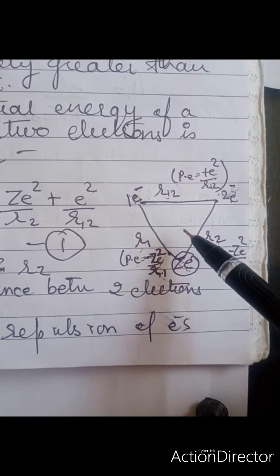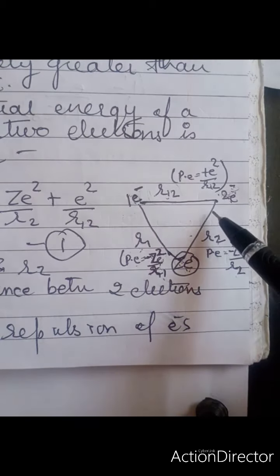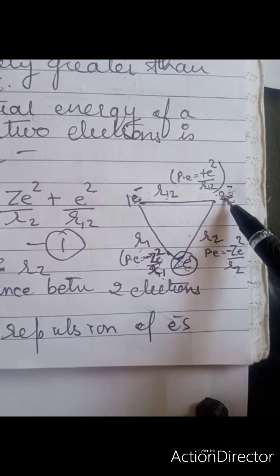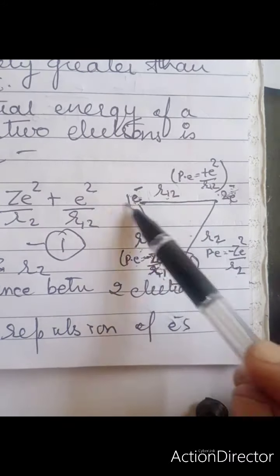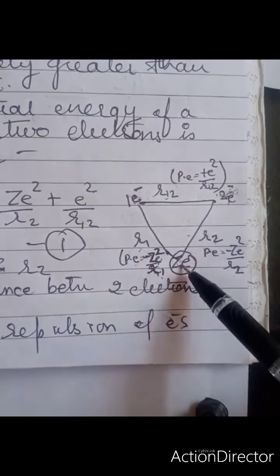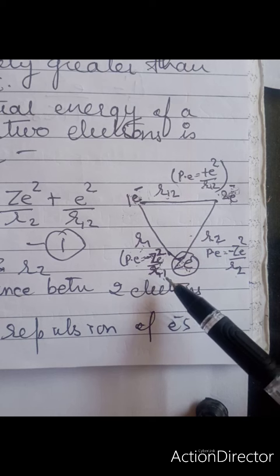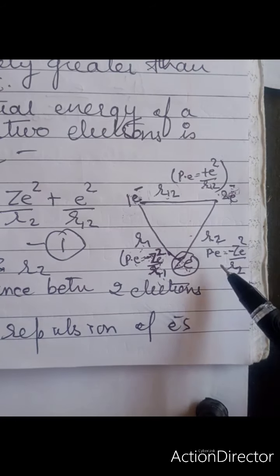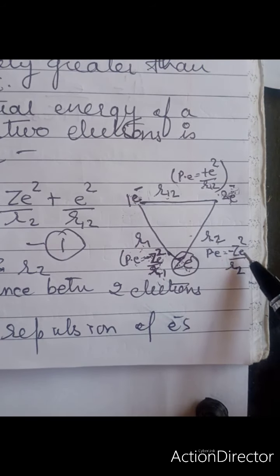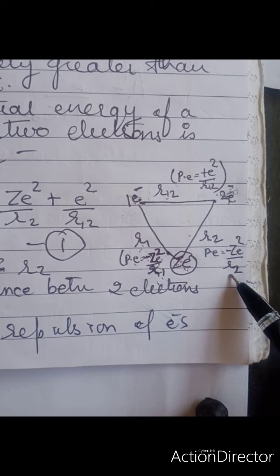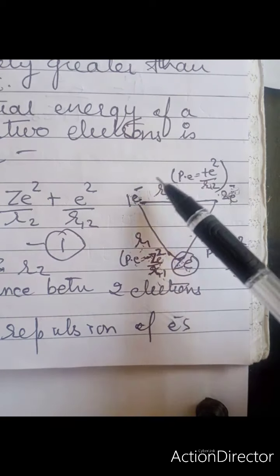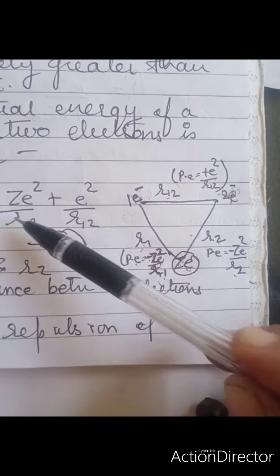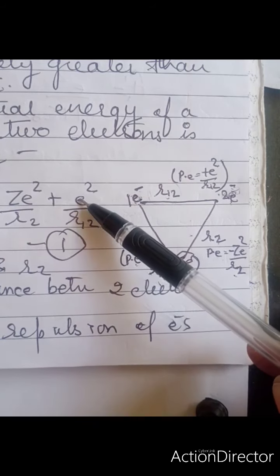To calculate the potential energy of the system, let us understand this diagram. This is the first electron, this is the second electron, and this is the distance between the two electrons. R12 tells us about the repulsion of the electrons. This distance is R1, this distance is R2. The potential energy in this case will be: minus ZE² upon R1, minus ZE² upon R2, plus E² upon R12.